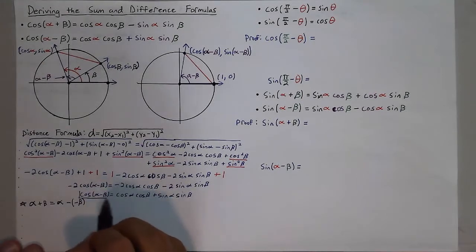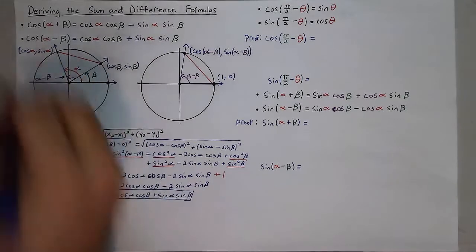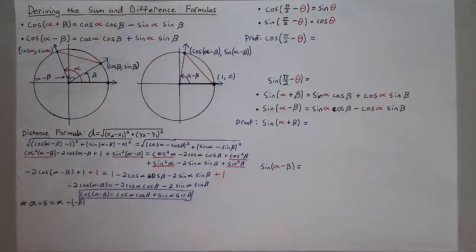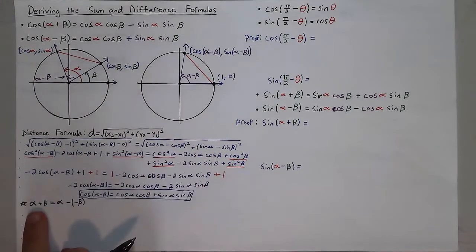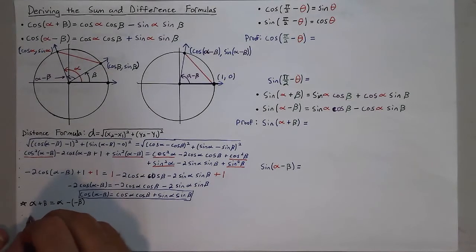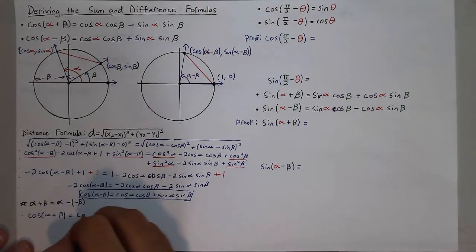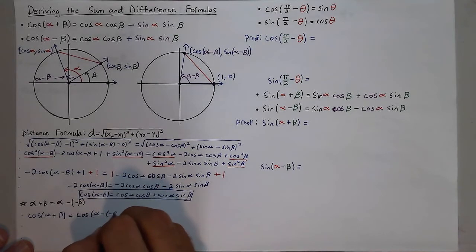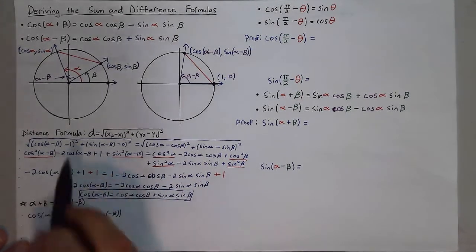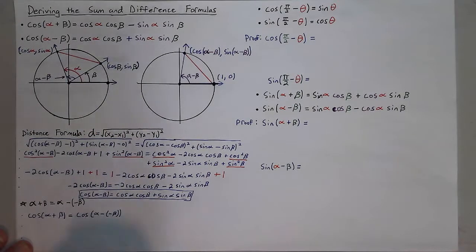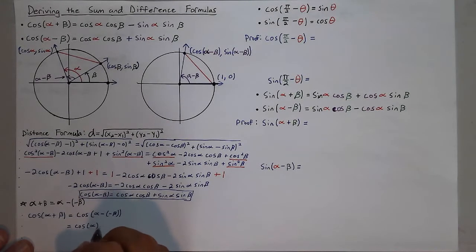You'll see this matches the formula we stated up here — that's how you derive one of these. Now, using identities, we can actually find all the other ones without doing nearly as much work. For example, alpha plus beta is the same thing as alpha minus negative beta. So cosine of alpha plus beta equals cosine of alpha minus negative beta, and I can use the identity I just derived to evaluate this.